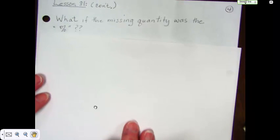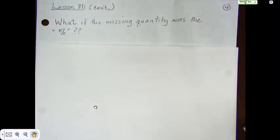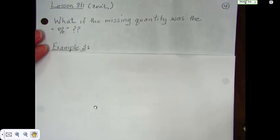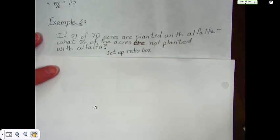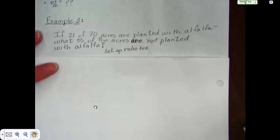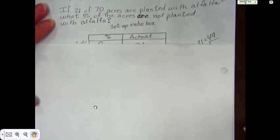Now, the last example is what if you're given a problem and the missing quantity that you're looking for is the percent. It's not the total or it's not one of the pieces. It's the percent. So let's look at another example. If 21 of 70 acres are planted with alfalfa, what percent of the acres are not planted with alfalfa? Again, set up your ratio box.